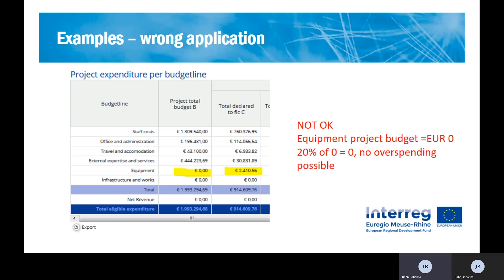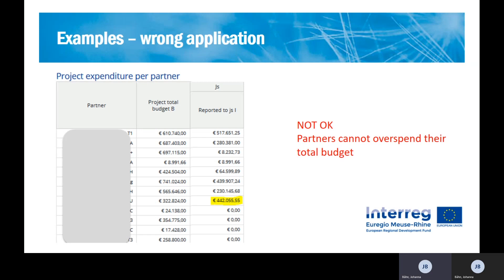Now two examples of a non-correct application. First, a project had no equipment budget planned, but a partner declared equipment costs to the FLC. The flexibility rule doesn't help here because 20% of zero is zero, so those costs will be rejected. In another example, a partner has a total budget of 322,000 but reports far more than that — actually exceeding even beyond the flexibility rule. The total partner budget must be respected, and the maximum for this partner remains the original 322,000.